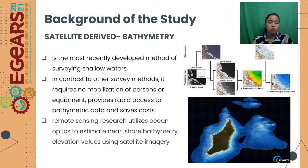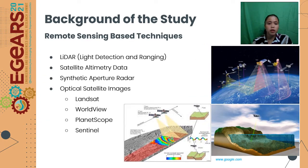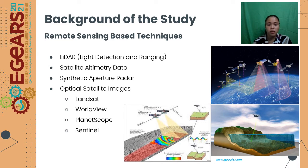Satellite-derived bathymetry is the most recently developed method of surveying shallow waters. In contrast to other survey methods, it requires no mobilization of persons or equipment, and it also provides rapid access to bathymetry data at reduced cost. Satellite-derived bathymetry utilizes ocean optics to estimate near-shore bathymetry elevation values using satellite images. Some remote sensing-based techniques are LIDAR, synthetic aperture radar, and optical satellite images. Examples include Landsat, Worldview, PlanetScope, and Sentinel.